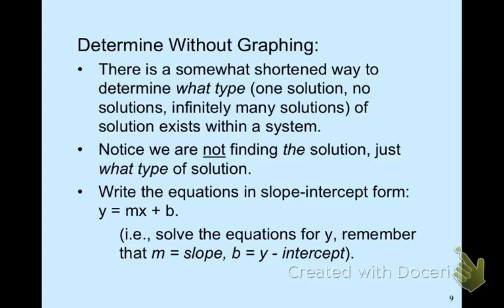To determine without graphing what type of solution exists in a system — one solution, no solution, or infinitely many — write both equations in slope-intercept form by solving for Y, where M is the slope and B is the Y-intercept. This lets you determine the type first. However, if there is one solution, you must find it using your preferred method: graphing, substitution, or elimination.